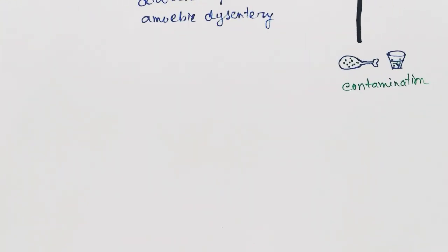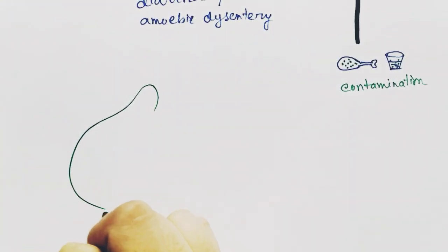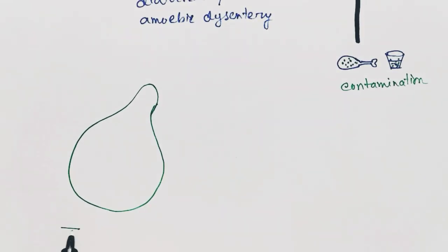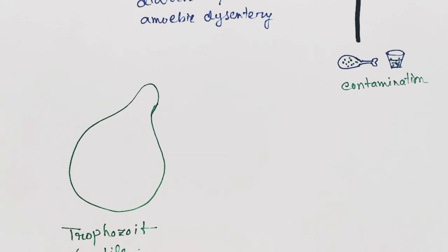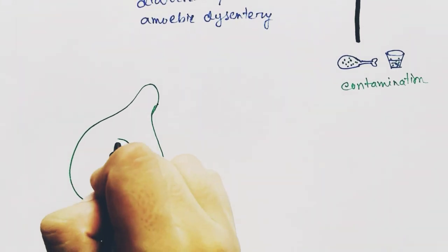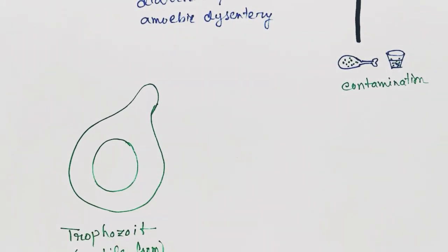This trophozoite, or mobile form, looks like this in the microscope. This is the microscopic view of the trophozoite, the mobile form of Entamoeba histolytica.